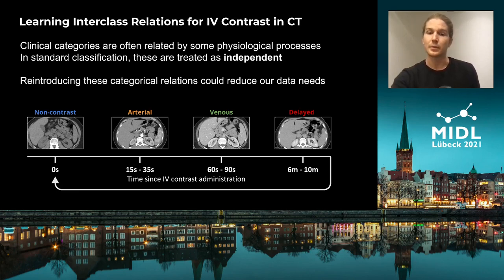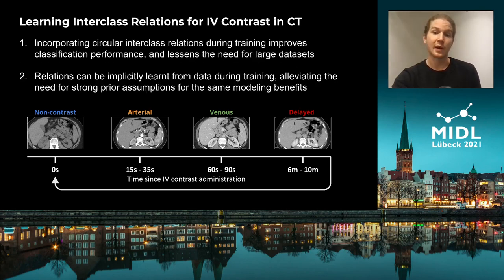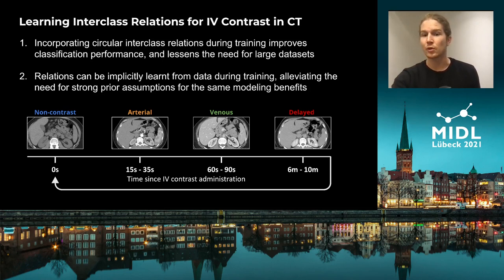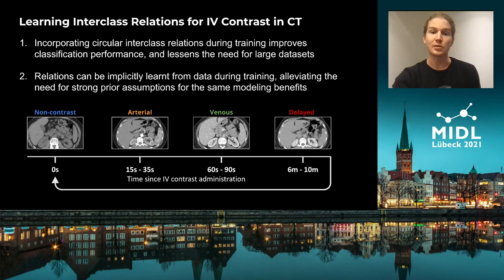So in this study, we show that reintroducing these types of categorical relations into our training process actually reduces the amount of data that we need to achieve good performance. We also proposed some new approaches that let us implicitly learn these categorical relations from the data itself during training, alleviating strong assumptions in our network, while preserving some of the benefits that come from incorporating these relations into the training process with respect to network performance.